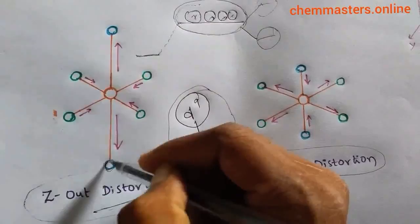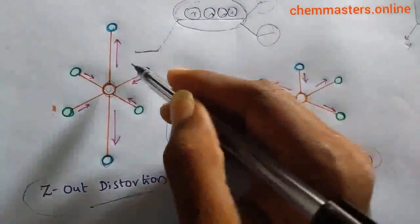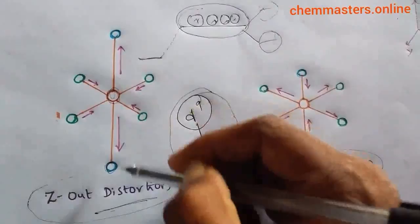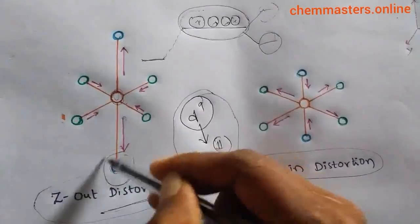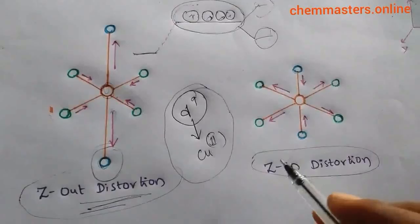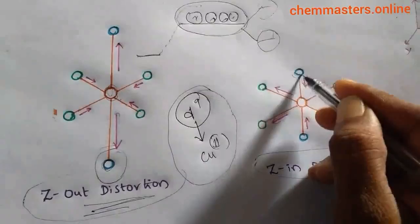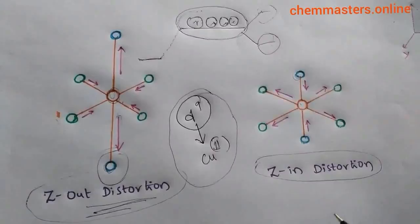Z-out distortion means what is happening in the geometry of an octahedral copper(II) complex. The ligands which are attached to the central metal ion copper(II) through the Z-axis are elongated — that is why it is called Z-out distortion. In the other arrangement, the ligands on the Z-axis come towards the metal, and this is simply called Z-in distortion.